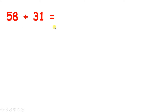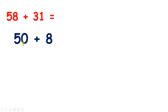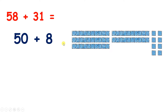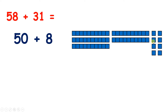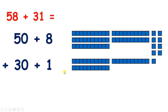Now we have 58 plus 31. How can we partition the numbers 58 and 31? Well, 58 is 50 plus 8, because we have 5 tens and 8 units. And 31 is 30 plus 1, because we have 3 tens and 1 unit.